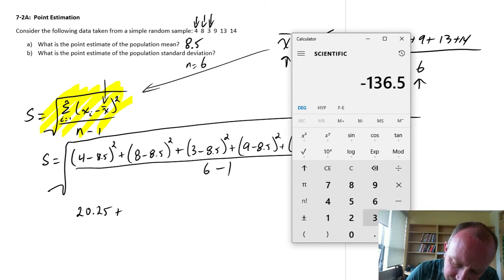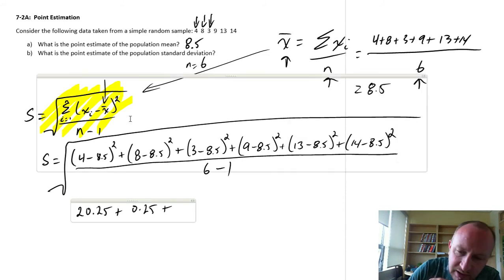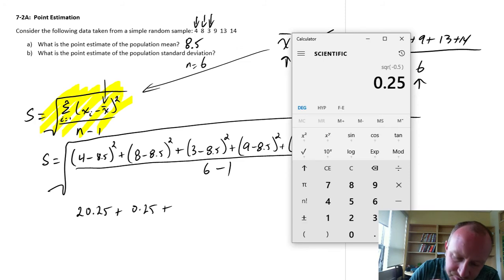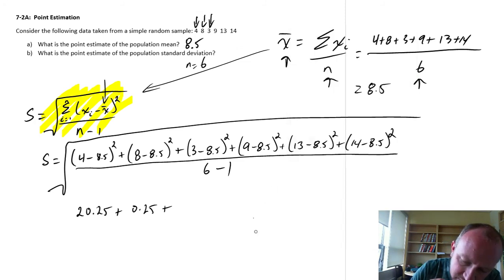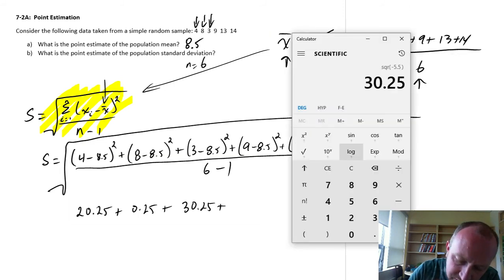That can't be right. 8 minus 8.5 and square that. There we go. There's 0.25 plus 3 minus 8.5 squared. 30 and a quarter. Okay, this will be a little bit tedious here.